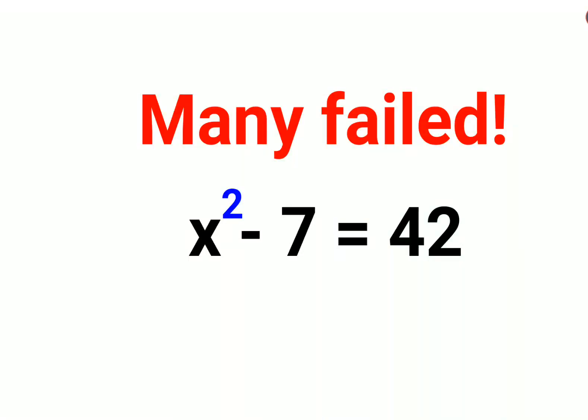Welcome everyone. Today we're going to understand how to solve this very nice math test problem which literally many people failed. The question is x² - 7 = 42.